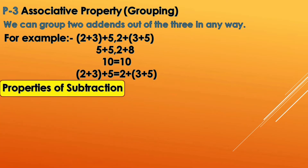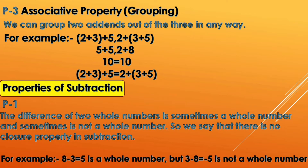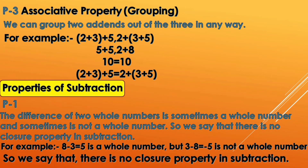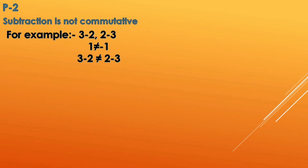Now the properties of subtraction, which is the opposite of addition. For subtraction, sometimes when you subtract two whole numbers you get a whole number, and sometimes you don't — so there is no guaranteed closure. For example, 8 minus 3 is 5, and all three are whole numbers. But if we reverse the order, 3 minus 8, the answer is not a whole number. So there is no closure property in subtraction. Subtraction is also not commutative — if you change the order the answer is not the same. For example, 3 minus 2 is not equal to 2 minus 3.